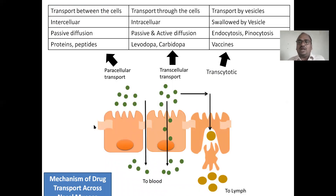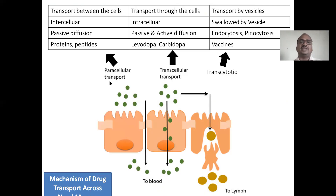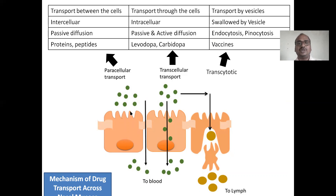Once the drug particles enter the nose through the nasal cavity, there are three types of transport routes. First, paracellular transport — between the cells, also called the intercellular route — passive diffusion. Most hydrophilic drugs, proteins, and peptides are transported this way. Second, transcellular transport — through the cell wall and nucleus. Lipophilic drugs like levodopa and carbidopa choose this route, with both passive and active diffusion.